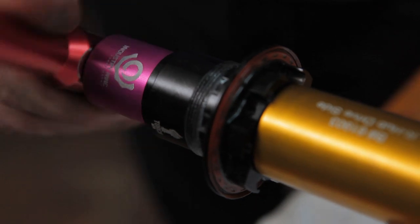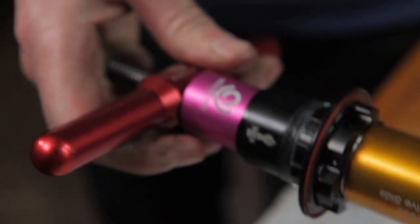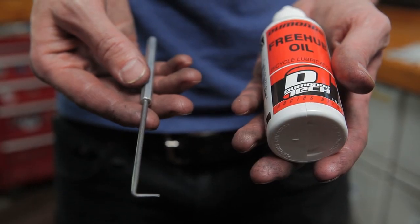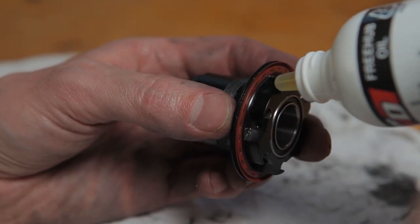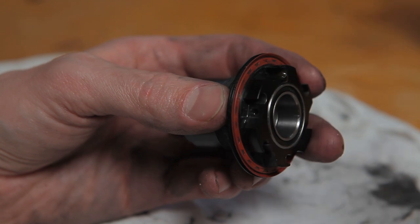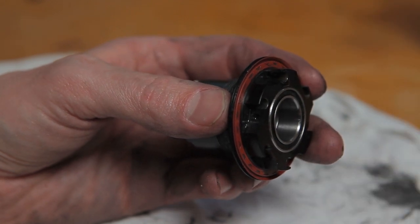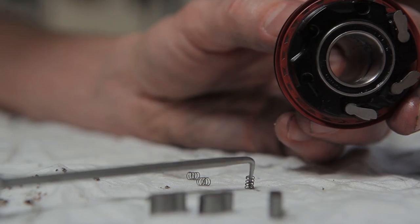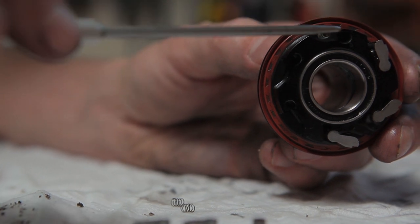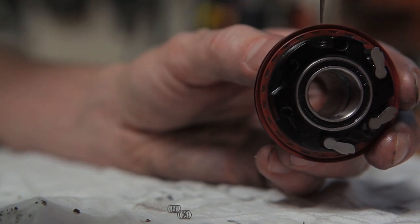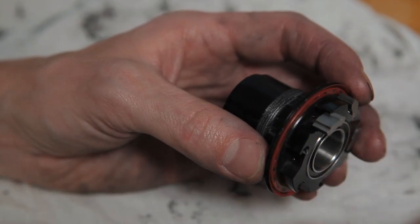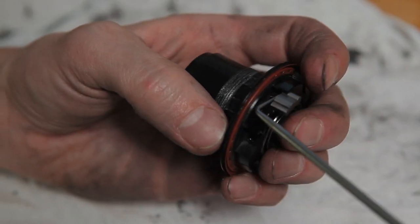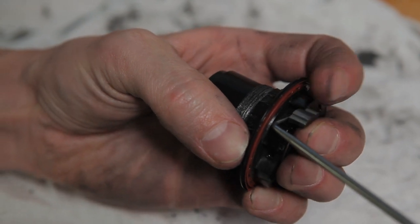Now that your freehub bearings are installed, you can reinstall your pawls and springs. You'll need a pick and some Dumontech freehub oil. Put a drop of freehub oil in each pocket before placing the spring. Using your pick, pick up the spring and drop it in its pocket. Stage the pawl next to the spring. With the spring depressed by the pick, slide the pawl into position.